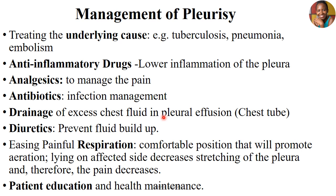Drainage can be performed through a chest tube or by thoracentesis procedure. Administration of diuretics is essential mainly for preventing fluid build-up and draining as much fluid as possible from the area. Because patients have painful respirations, they need to be put in a comfortable position that promotes adequate aeration. If possible, encourage them to lie on the affected side so as to decrease stretching of the pleura, which reduces chances of increased pain — lying on the affected side limits the ability to stretch the walls, thereby reducing pain.